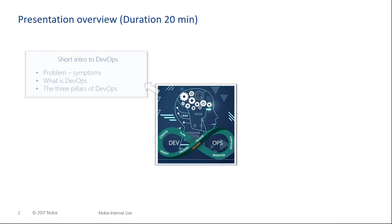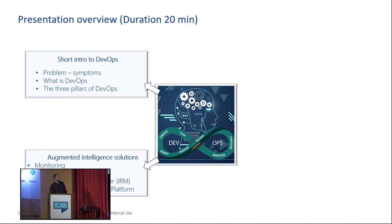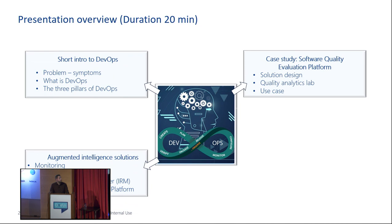This is the overview of the presentation. First, I will introduce you to DevOps — a very brief introduction. Second, I will mention several augmented intelligence solutions for DevOps, positioning them within a sample continuous integration and deployment pipeline. The third and main section is about the software quality evaluation platform, including the quality analytics laboratory design, a representative use case, and a summary of benefits, risks, and future steps.